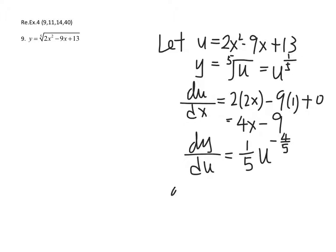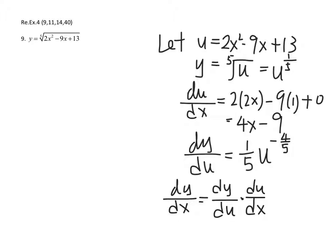To find dy/dx, you have to write down dy/du times du/dx. These two terms are the same — if you cancel the du terms, dy remains dy and dx remains dx, so you still have dy/dx.